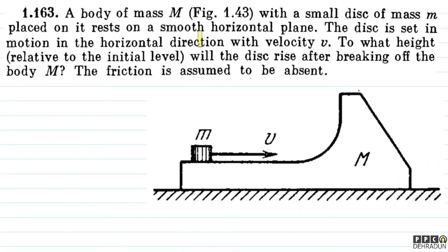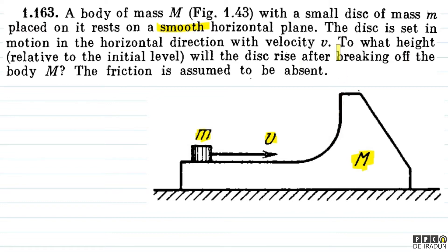So, in this problem we have a body of mass capital M, and on top of it is placed a small disc of mass small m. All the surfaces are smooth. The disc is given velocity v in the horizontal direction. It's quite obvious that the disc will start rising upward. We are asked: to what height relative to the initial level will the disc rise after breaking off body M — meaning after it loses contact with M, how high will it go?